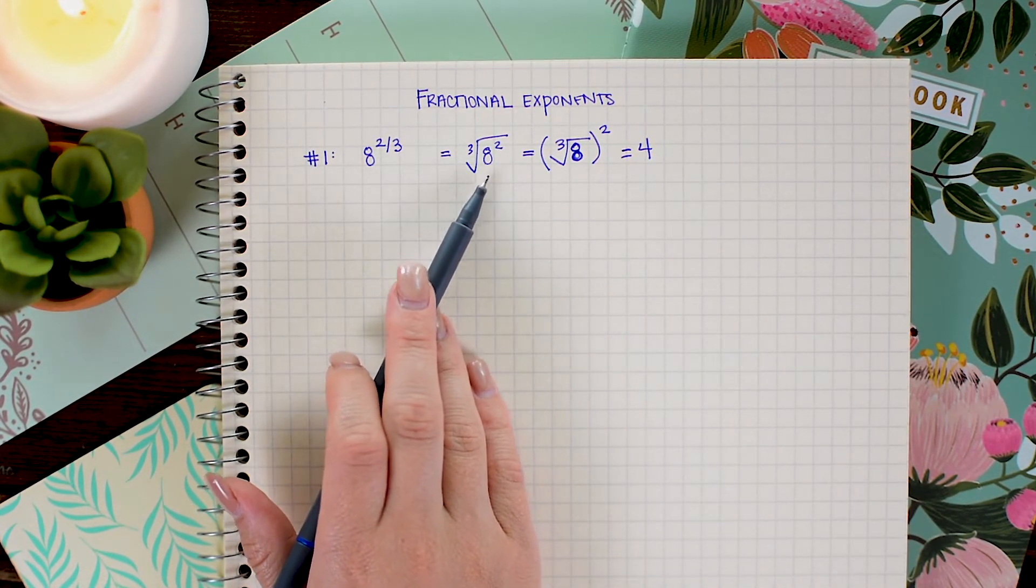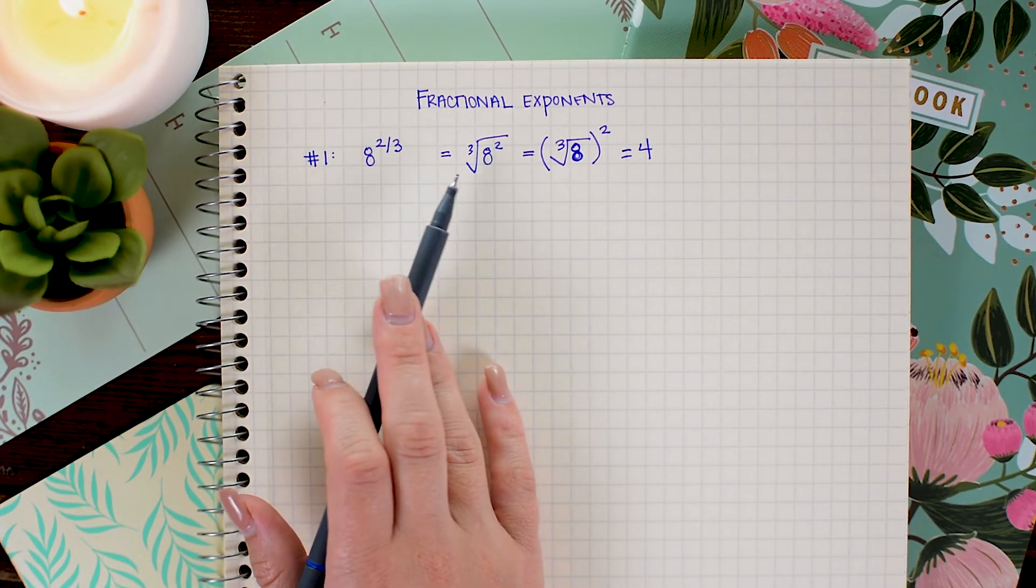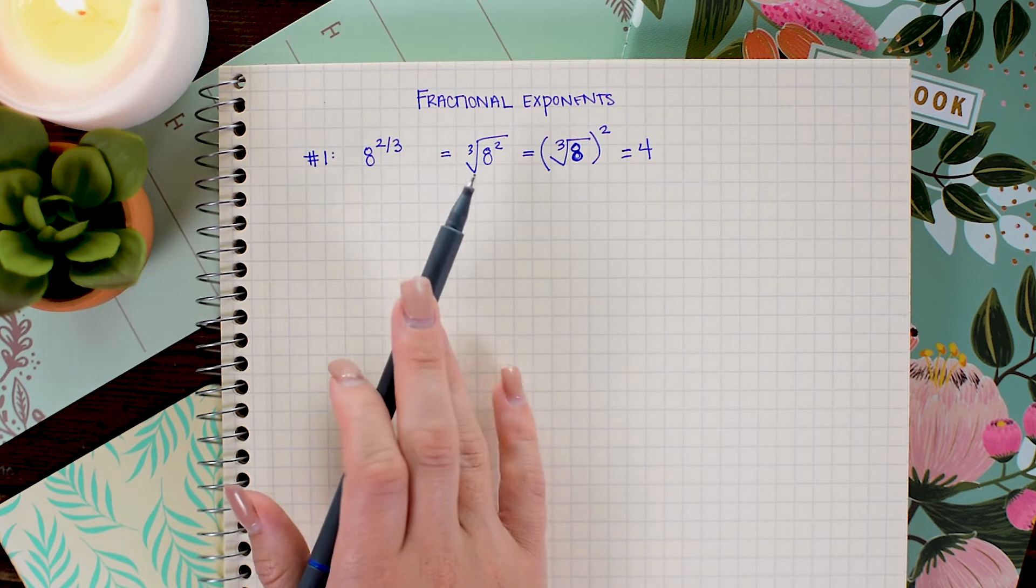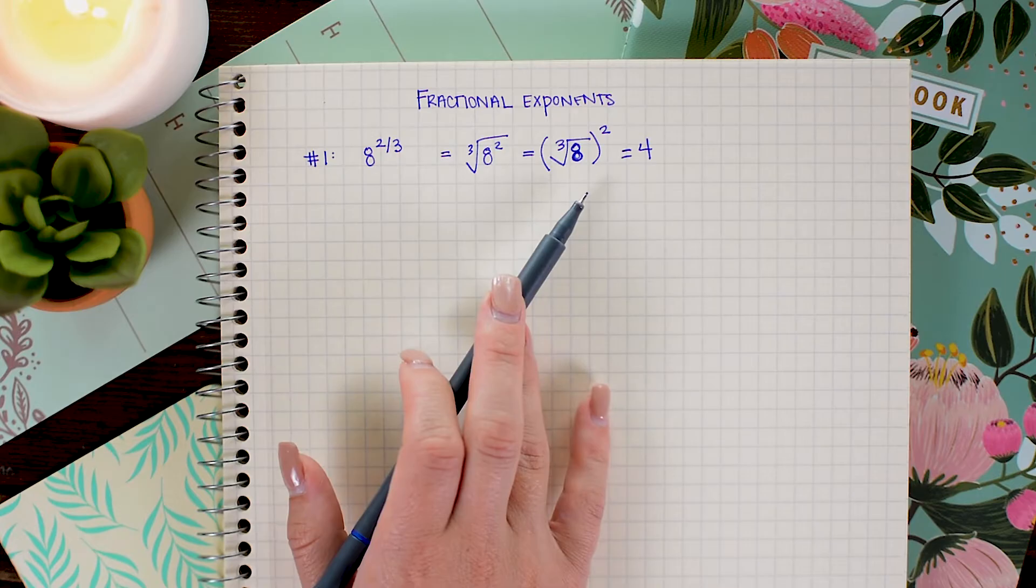Versus the other way, which would be to square 8 and have 64, and then you need to know that the cube root of 64 is 4. Again, maybe that's common knowledge to you and seems really easy as well. Either way is totally fine.